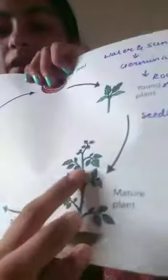After germination, the plant grows into a big, mature plant with branches and leaves. This is how it looks.